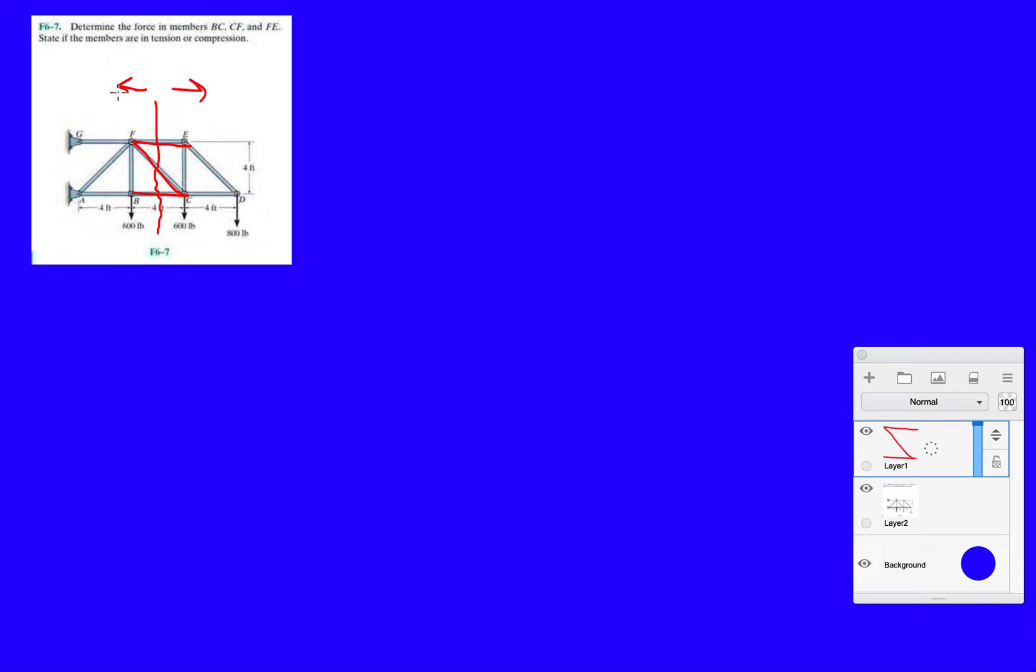But if we analyze the right-hand side portion, we already have all the given forces here, and we're just going to find all these unknowns that we need. So we don't have to do the extra step of finding the reactions. Let's find the shortcut.